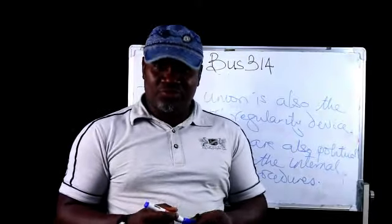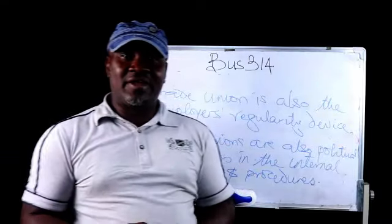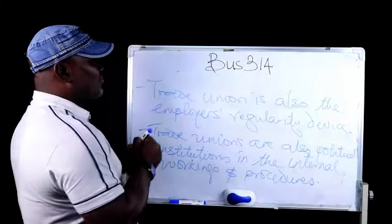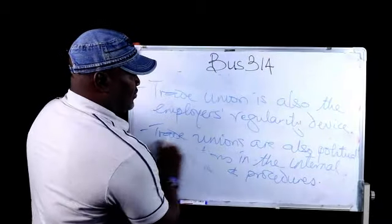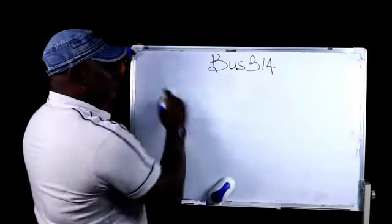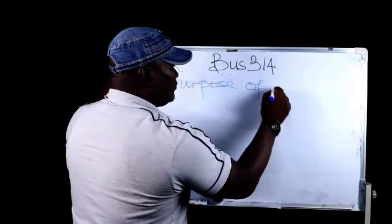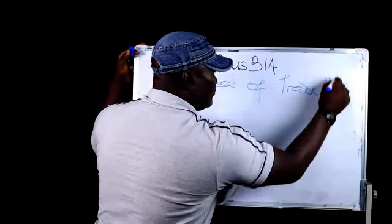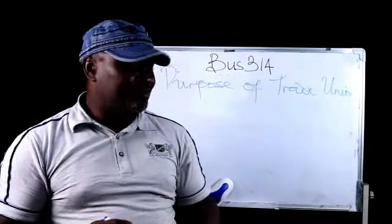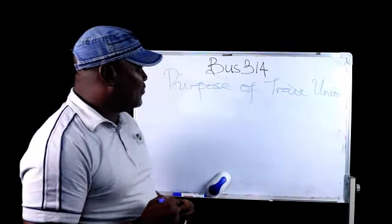So far we have been able to look at five different features or characteristics of what a trade union is. Now we are going to look at the purpose or the reason for trade unionism. These associations cannot just be formed without reasons, and one of the basic reasons is they negotiate wages and terms of condition.